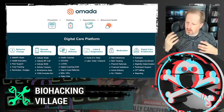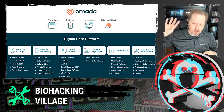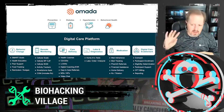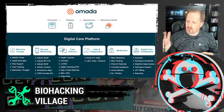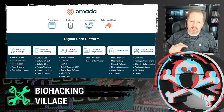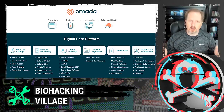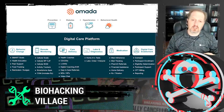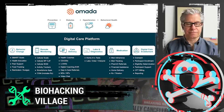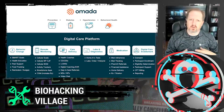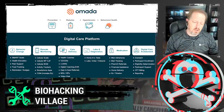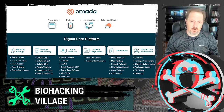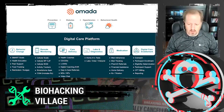We do that through behavior change, remote monitoring with digital devices, care delivery, lab diagnostics, medication tracking, and a whole bunch of back-end systems that are necessities in healthcare like outreach to patients, enrollment and eligibility, billing and reporting. We have four core diseases: type 2 diabetes prevention, type 2 diabetes treatment, hypertension, and last year we added behavioral health — treating anxiety and depression. Recently, we acquired a company called Physera that does digital physical therapy for musculoskeletal and pain treatment.